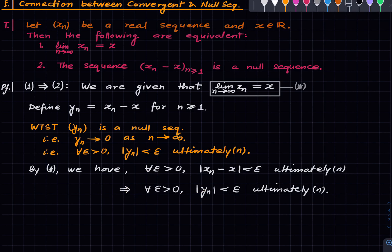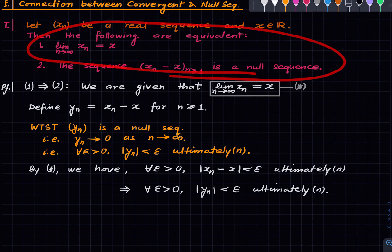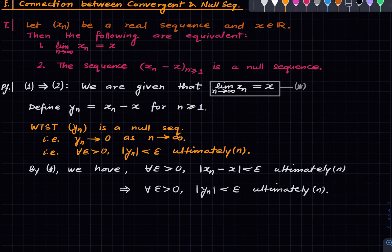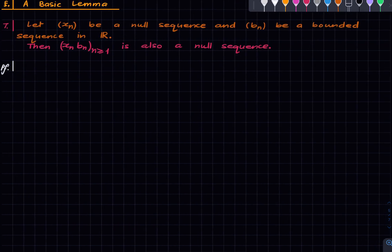It's a very simple proof. Of course, the reverse direction is remaining, but that can be done by reversing these steps. It's a very simple reformulation of convergence to a point x: you just say that (xn minus x) is a null sequence. Now for another unrelated lemma, and this will be the last thing for this lecture.